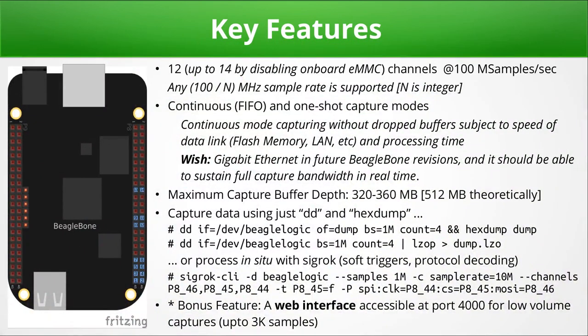Since the BeagleLogic kernel module presents itself as a normal device node, you can also use standard Unix tools like DD and hexterm to capture and view data, or pipe the output to an LZO compressor to obtain a compressed logic dump. BeagleLogic is optimized for large captures; the buffer can be as large as 360 megabytes, and depending upon bandwidth and processing time availability, BeagleLogic can also accomplish continuous or streaming capture.